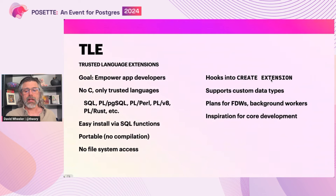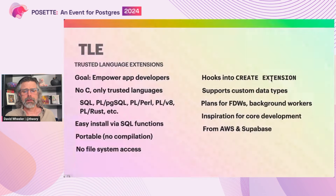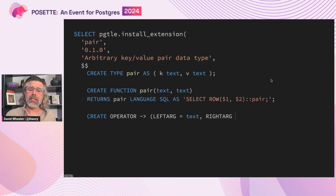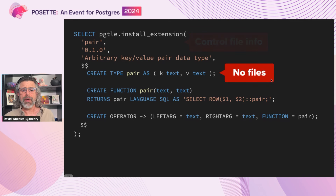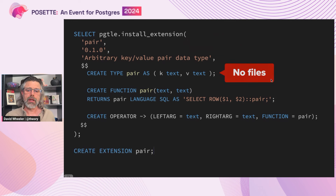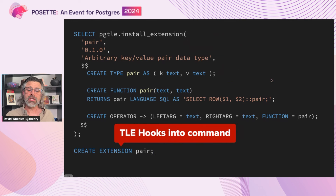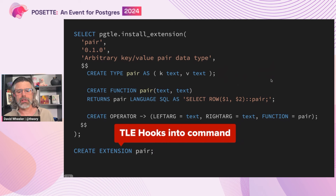Here's a TLE example that installs an extension named 'pair.' Note that the first few arguments to the install extension function are pretty much identical to the contents of the control file we saw earlier. We pass the contents of the normal SQL files that create the extension objects as subsequent arguments. And then, once installed, thanks to pg_tle's hooks into the guts of Postgres, a normal CREATE EXTENSION command will automatically load the extension, just as if it had been installed via the file system.